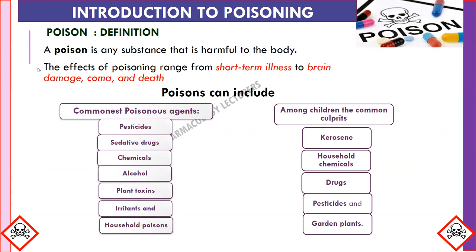The effects of poisoning may range from short-term illness to brain damage, coma, and in some cases death. The causes of poisoning are many — it can be civilian, industrial, accidental, and deliberate.